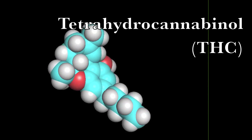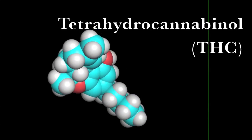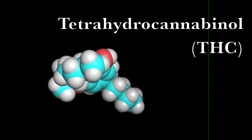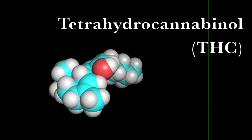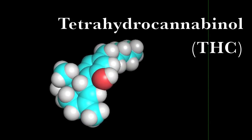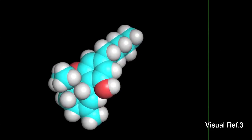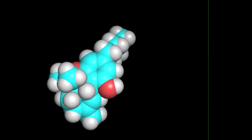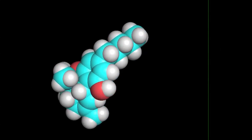THC, or delta-9 tetrahydrocannabinol, is a chemical that has been gaining a significant amount of attention in the media. THC is the principal psychoactive agent in cannabis sativa, the plant more commonly known as marijuana. The efficacy of marijuana and its recreational use have motivated both news headlines and ethical discussions.